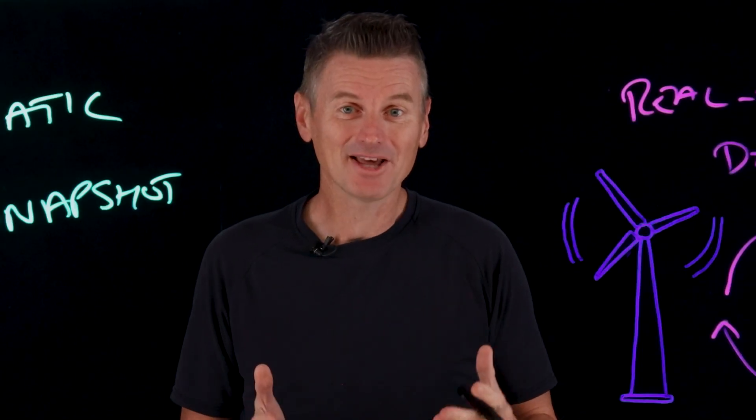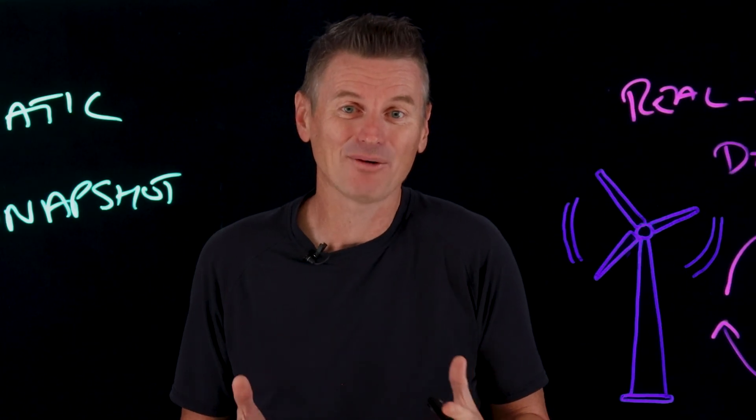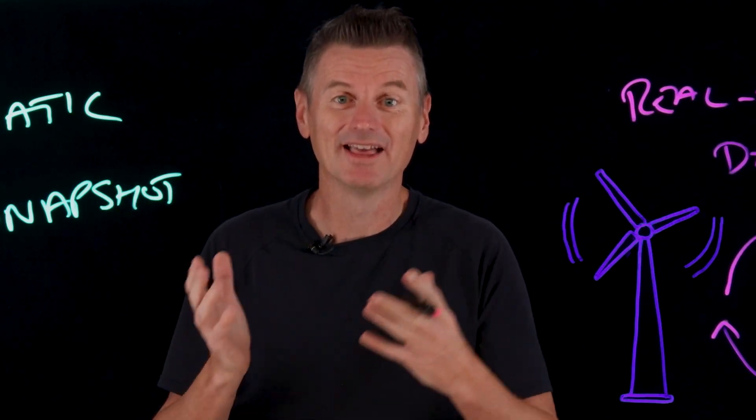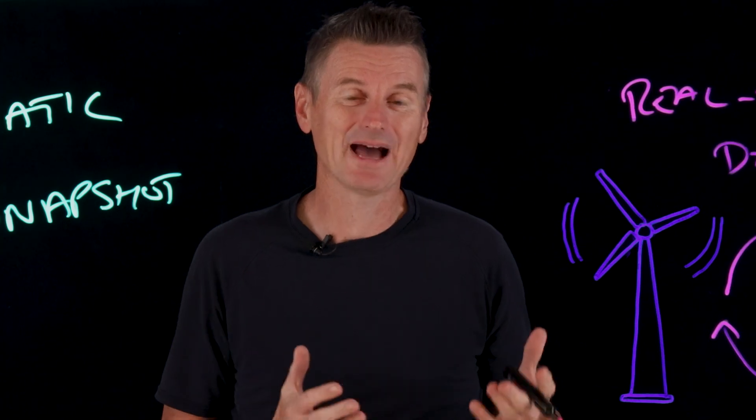Digital twins are designed around a two-way flow of information that occurs when the object's sensors provide relevant data to the digital twin, and then when the insights created by the digital twin are shared back with the original source object. Simulations tell us how things should work. Digital twins show us how things are working right now.